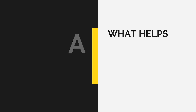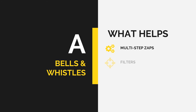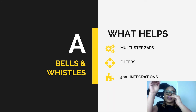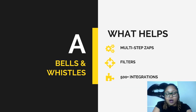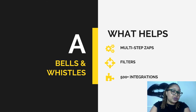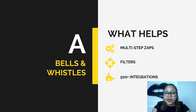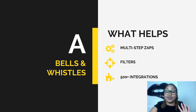Now let's talk about bells and whistles. I'm giving Zapier an A for bells and whistles. You can do all sorts of fancy things like multi-step Zaps — connecting software A to software B and then to software C all at once. You can filter out certain Zaps, for example saying you only want data sent over when the person's name starts with the letter A. There are so many integrations, and you can do a lot of stuff with Zapier.